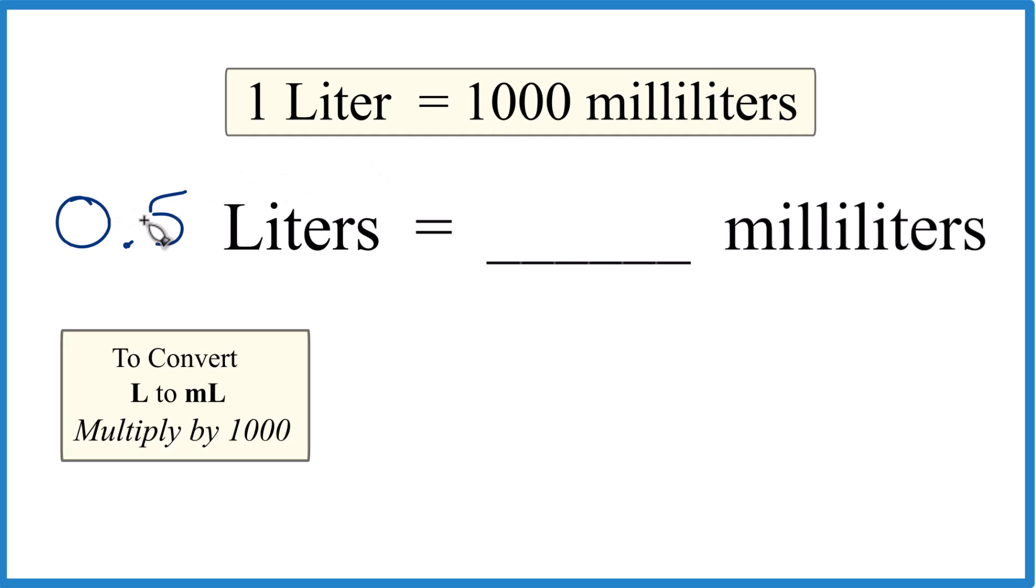We know 0.5 is one half. So half of a liter is going to be half of 1,000 milliliters, just 500 milliliters. But let's work it out.